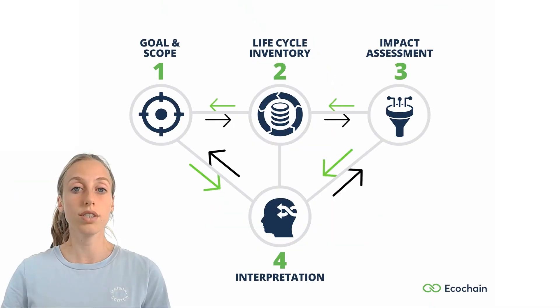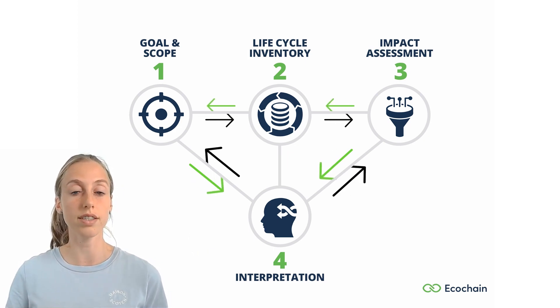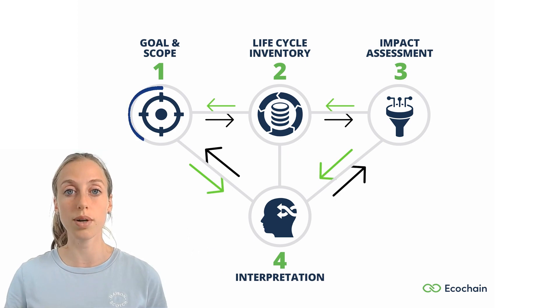Hi, I'm Emma, Environmental Specialist at EcoChain, and I'm going to explain to you the goal and scope phase of LCA. In the ISO standard 14,040, four phases of LCA have been specified that you need to follow. The goal and scope phase is the first one of these four, and therefore this phase has a big influence on the rest of your LCA — what you're going to measure and how you're going to measure it.